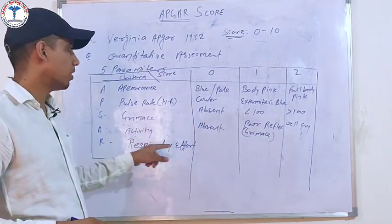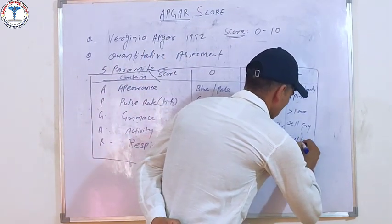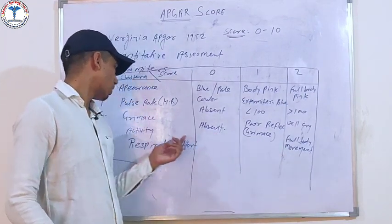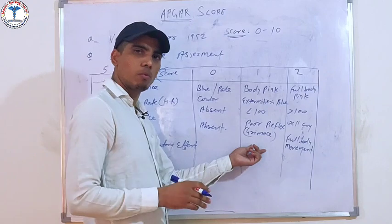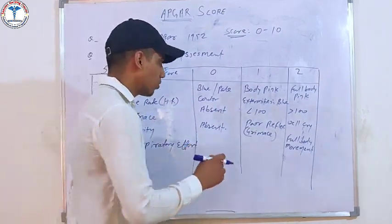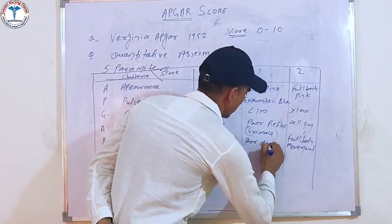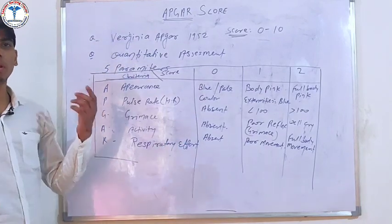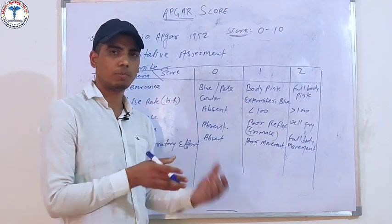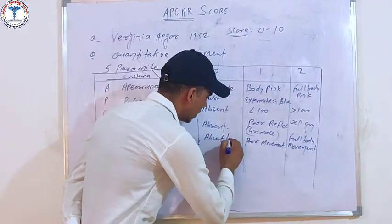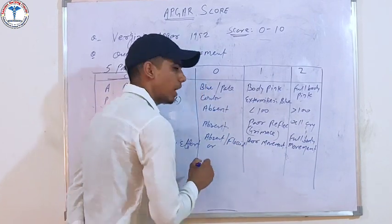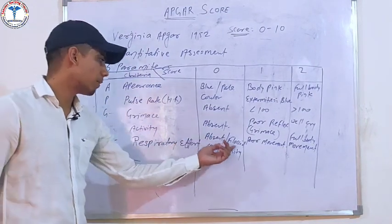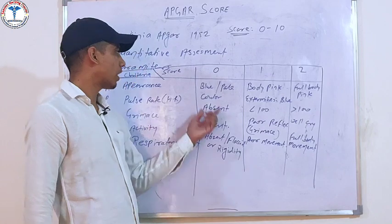For Activity, we check the muscle movement and tone of the baby. If full body movement is present, the score is 2. If there is some flexion or classified movement, the score is 1. If movement is absent or there is rigidity, the score is 0.